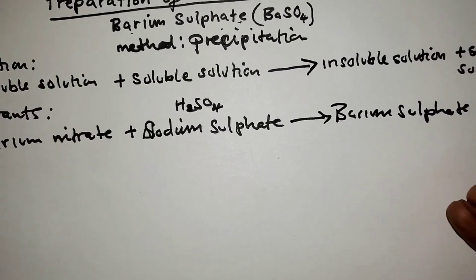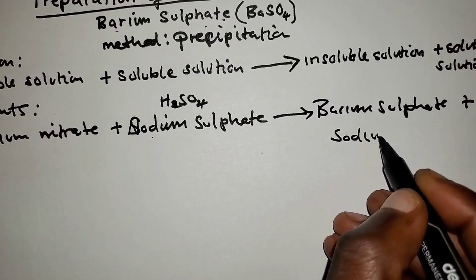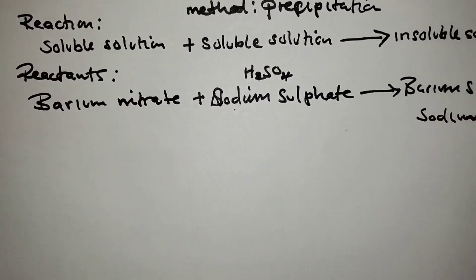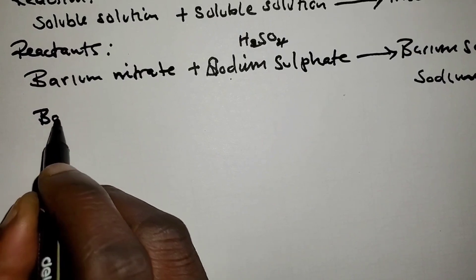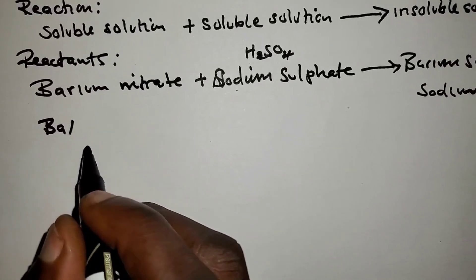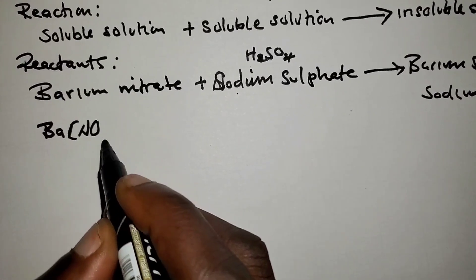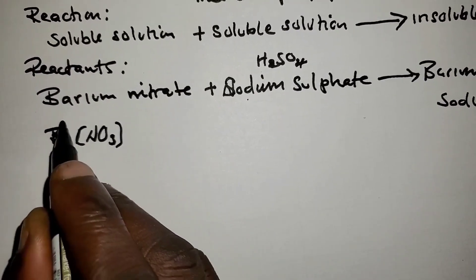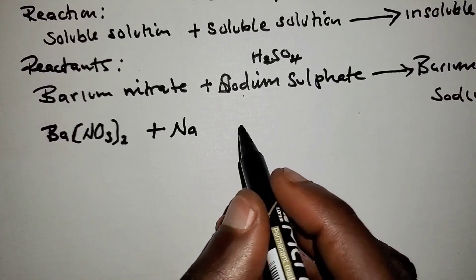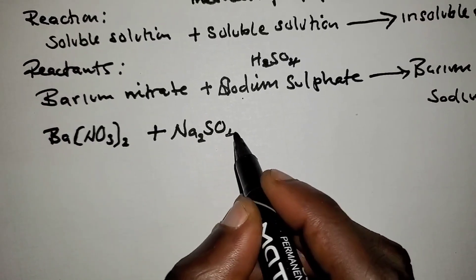The products formed will be barium sulfate and sodium nitrate. Writing the chemical equation: barium nitrate — barium has a valence of two (group 2), nitrate is a radical with valence one, giving Ba(NO₃)₂. Reacting with sodium sulfate — sodium is group one, sulfate is a radical with valence two, giving Na₂SO₄.